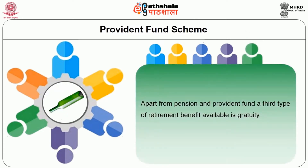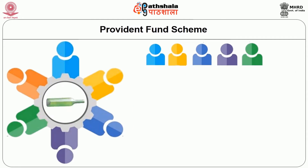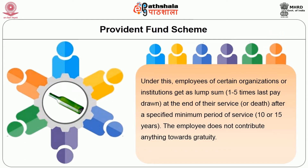Apart from pension and provident fund, a third type of retirement benefit available is gratuity. Under this, employees of certain organizations or institutions get a lump sum, usually 1 to 5 times of last pay drawn, at the end of their service or death after a specified minimum period of service, usually 10 or 15 years. The employee does not contribute anything towards gratuity.